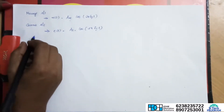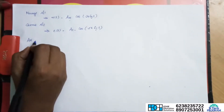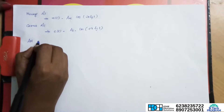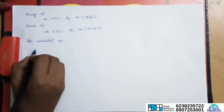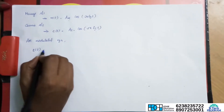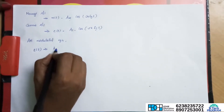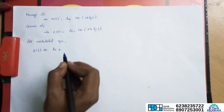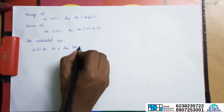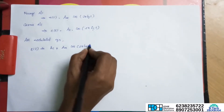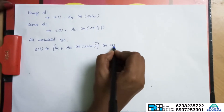These two signals are combined to form the amplitude modulated wave. The equation for the amplitude modulated wave is S of t.